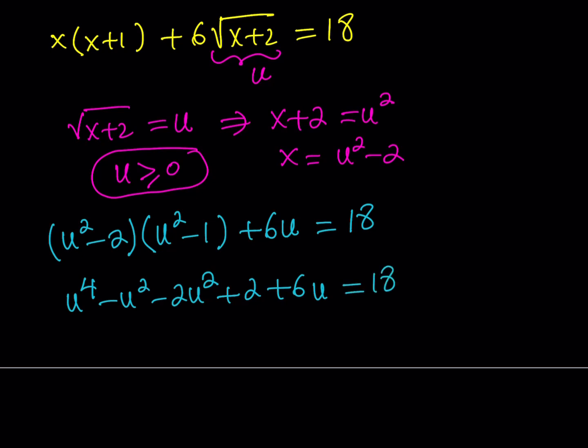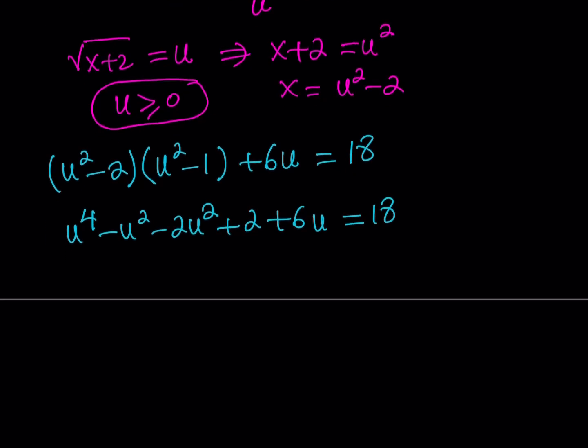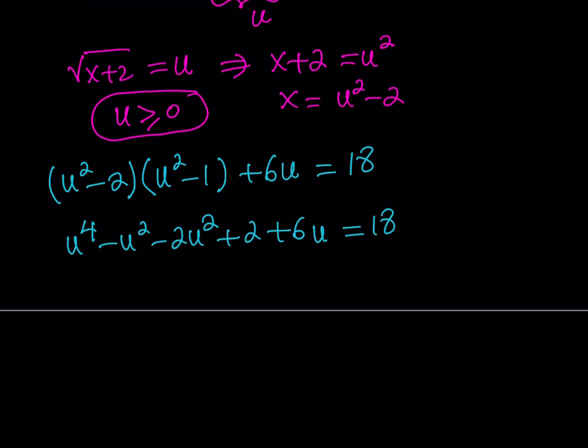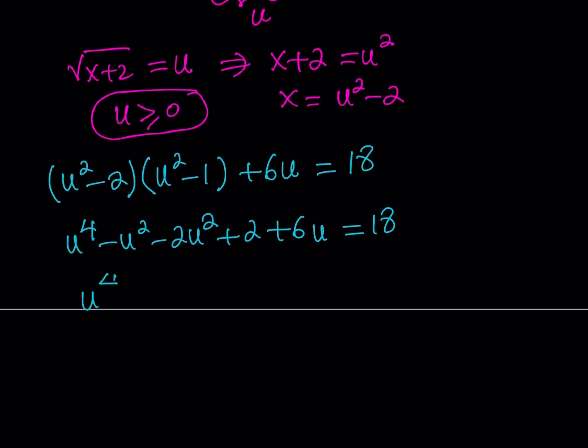Obviously, you want to simplify this a little bit. And one of the good things about using this approach is that we don't get a cubic term. And as you know, if you're trying to solve a quartic equation, one of the first steps that you do is get rid of the cubic so that you can reduce it. And it's called a reduced quartic. I'm going to simplify this. This is going to be u⁴ - 3u² + 6u. And I will bring over the 18 here, so that's going to be 2 - 18, which should be -16. The whole thing is equal to 0 now.